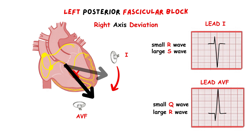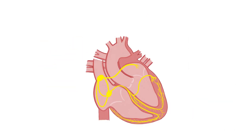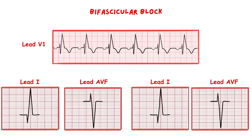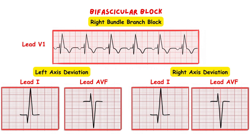Another thing we have to mention here is bifascicular block. Bifascicular block is a combination of a right bundle branch block and left anterior fascicle block or left posterior fascicle block. In this situation, the conduction of the impulses to the ventricles takes place only through the remaining non-blocked fascicle. The ECG will show typical features of right bundle branch block plus either left or right axis deviation.